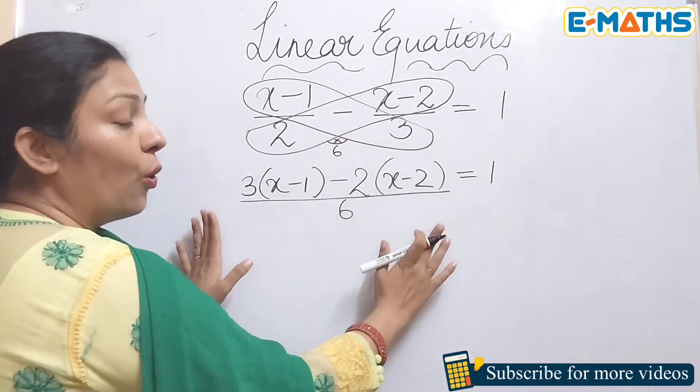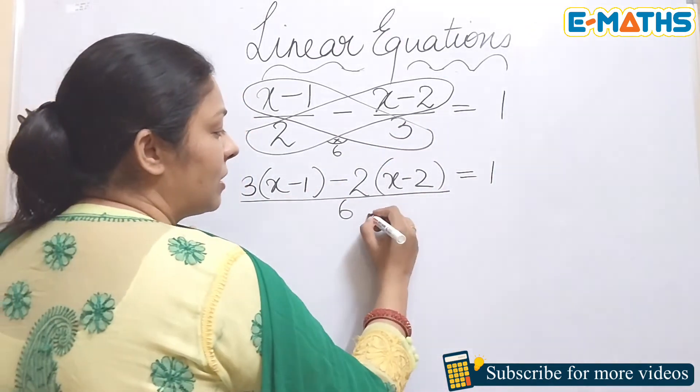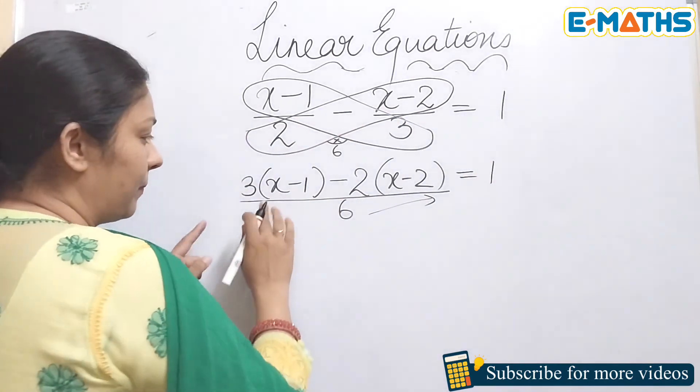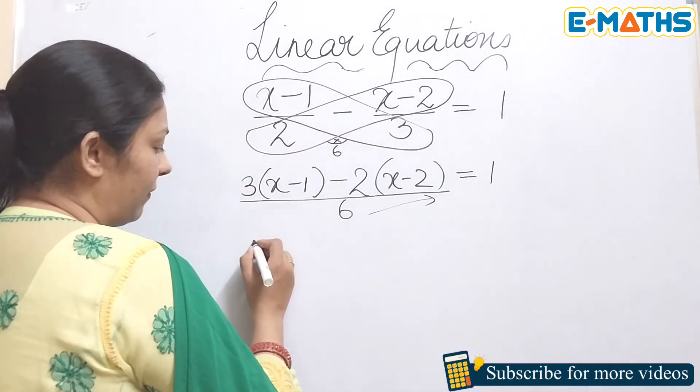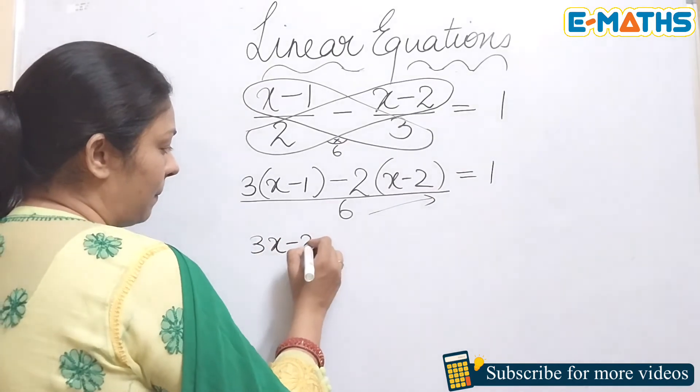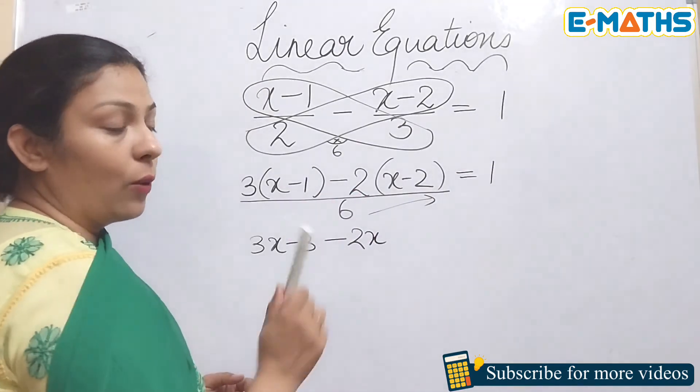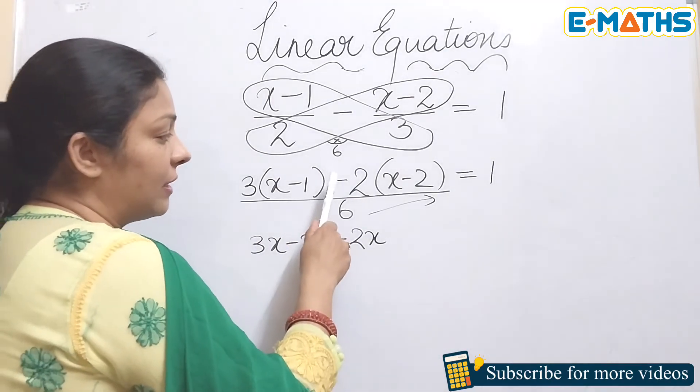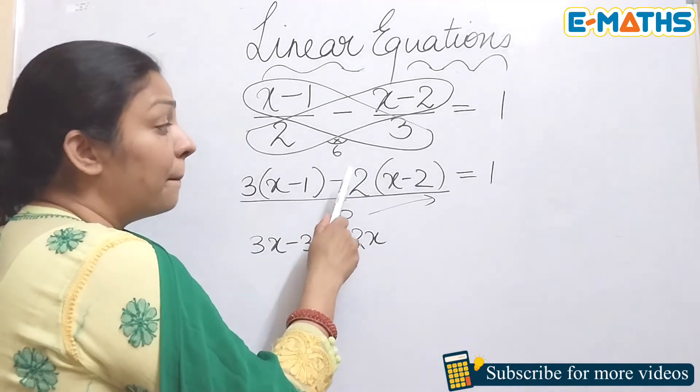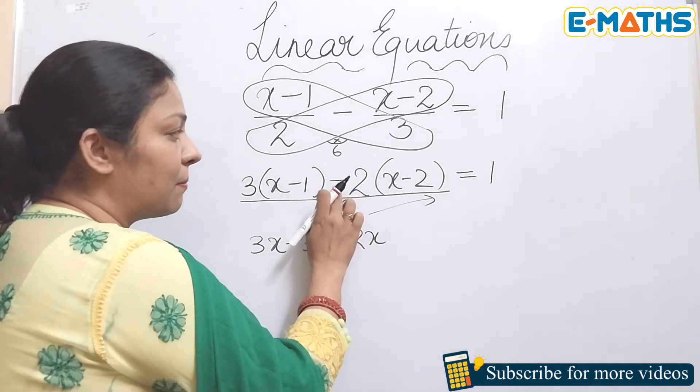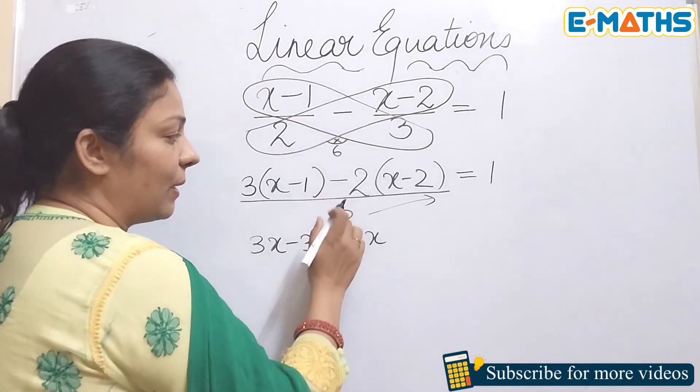In the next step, you can simply cross multiply this 6 on the other hand side. Let's open up the brackets. This will give you 3x minus 3 minus 2x. Now the point to be noted is here we have a minus sign before the bracket. Make sure you're multiplying this minus sign with this minus as well. So minus minus will give you plus 2 times 2 is 4.